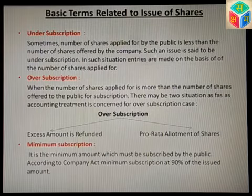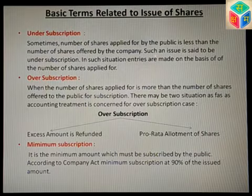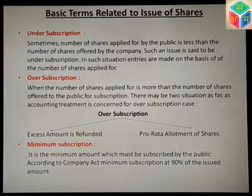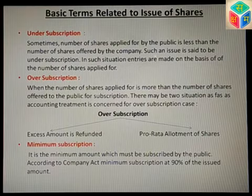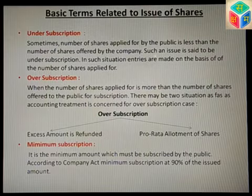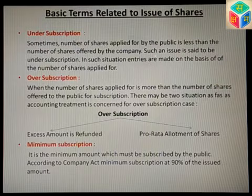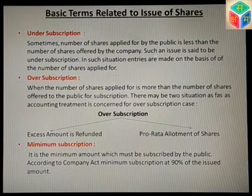Minimum subscription is the minimum amount which must be subscribed by the public. According to the Companies Act, minimum subscription is 90% of the issued amount. Whenever a company issues shares, at least 90% must be subscribed by the public. If 90% is not subscribed, the company cannot allot shares — it must cancel the allotment process and issue a fresh prospectus to invite new applications.